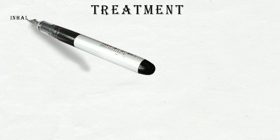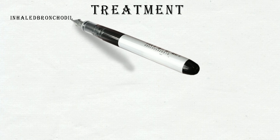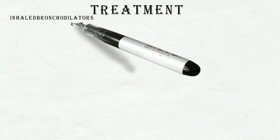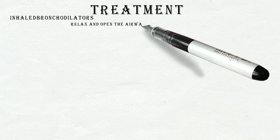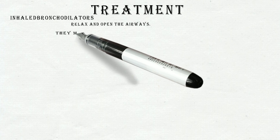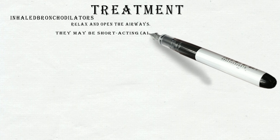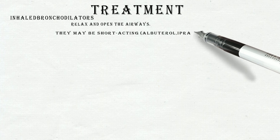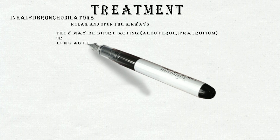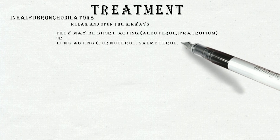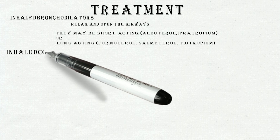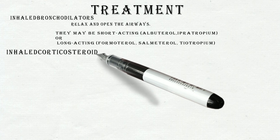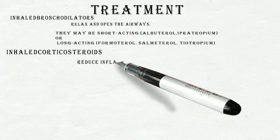Treatment is mainly focused on improving emphysema symptoms, mainly shortness of breath. Treatment includes inhaled bronchodilators, which relax and open the airways. They may be short-acting such as albuterol and ipratropium, or long-acting such as formoterol, salmeterol, and tiotropium. These medicines may be available as inhalers, puffers, or a solution. Inhaled corticosteroids reduce inflammation in the airways. Although inflammation is not generally felt to be a large contributor to emphysema, this medicine is often still helpful.